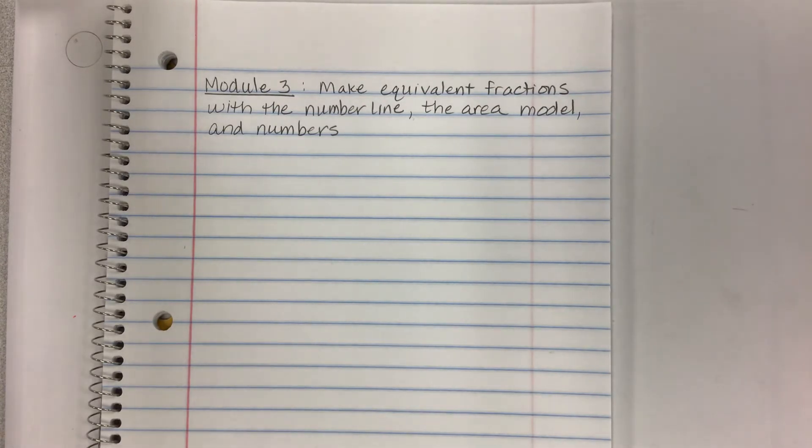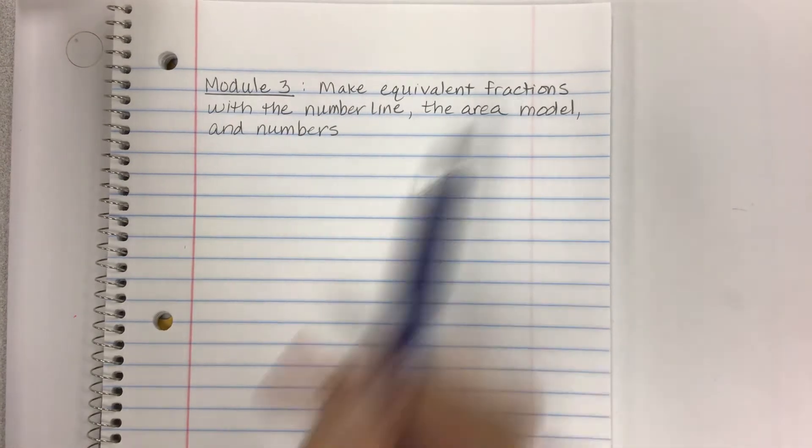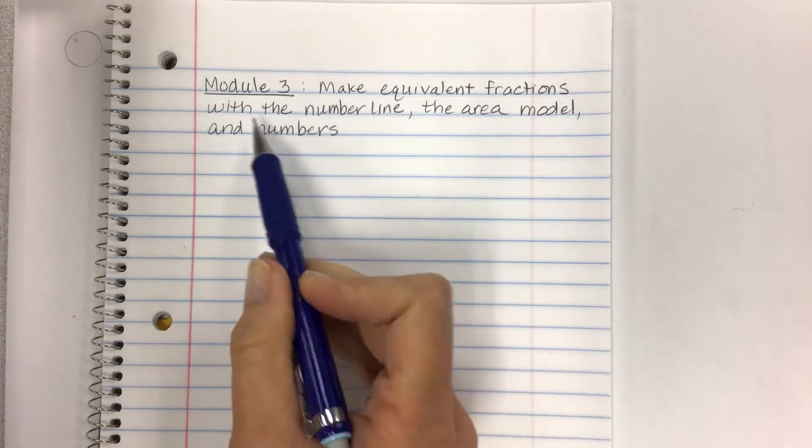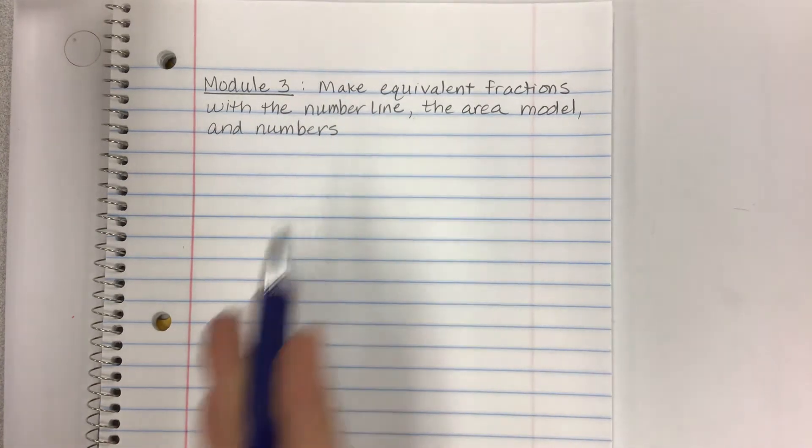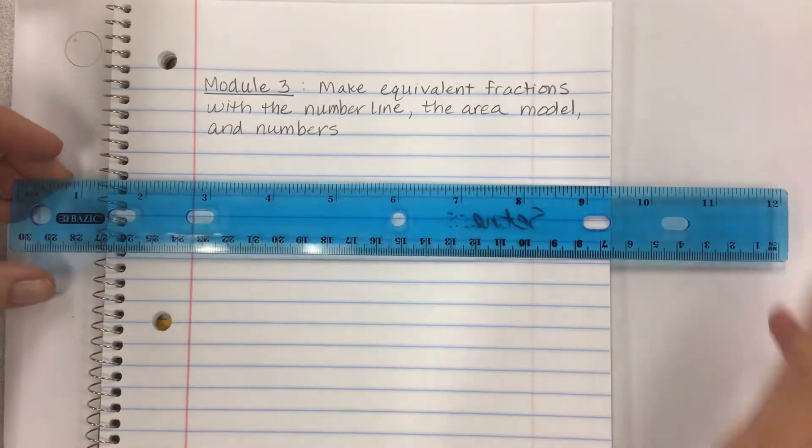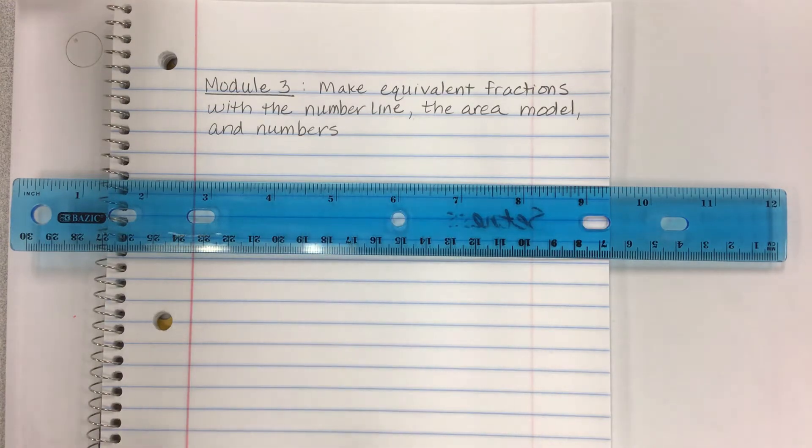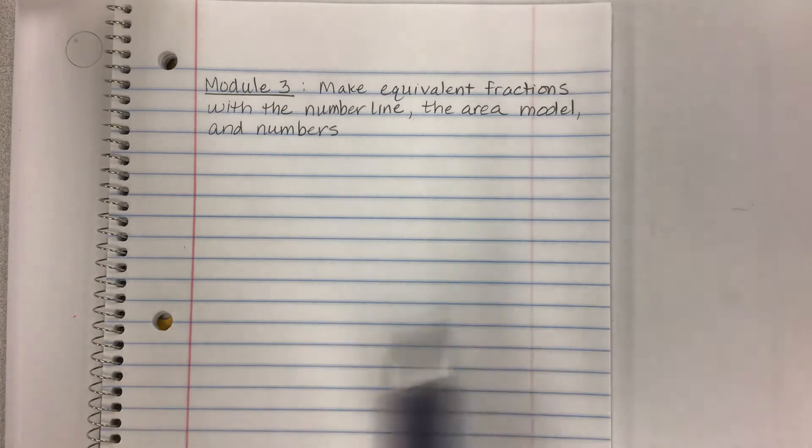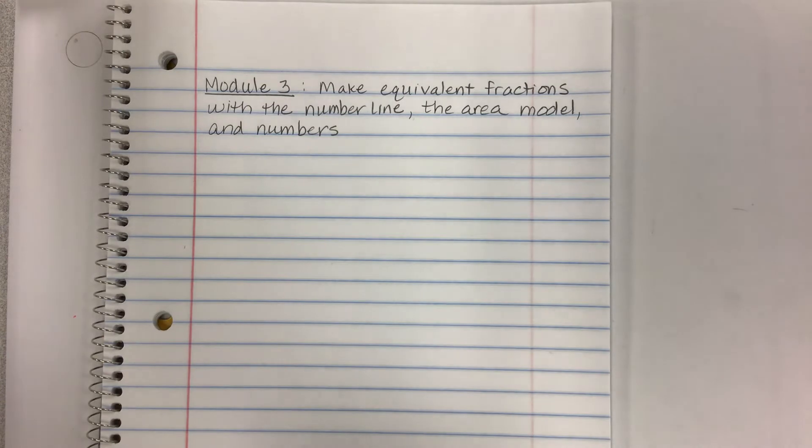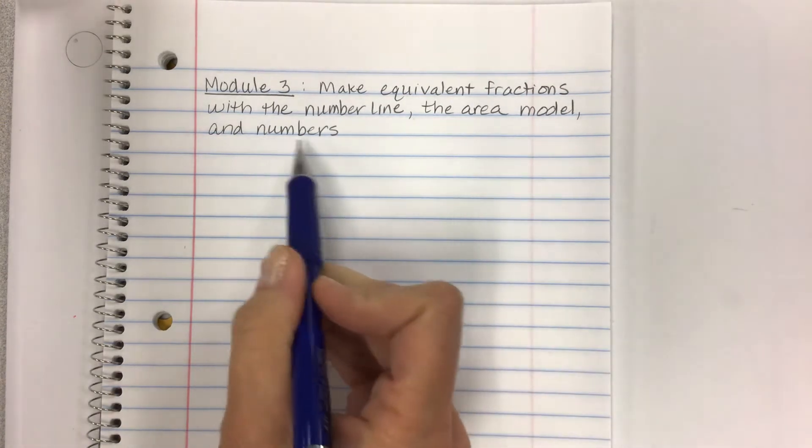The objective is to make equivalent fractions. We're going to be working with fractions all throughout this module. We're going to work with the number line because you can look at a ruler and recognize that there are fractions all over this ruler. Every time there's a little tick mark on there, that is a fraction of a whole. We're going to make an area model so that you can draw your own fractional model and hopefully see how many shaded parts out of the whole. And then we'll be using numbers, of course.